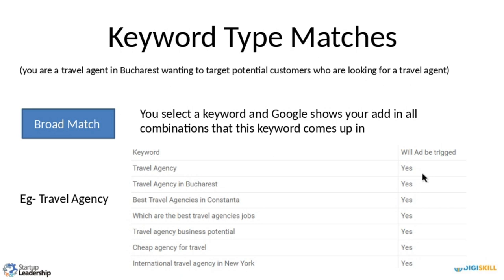By default, all the keywords you select on Google are broad match. It is up to you as a user to change the keyword condition. Google's objective is to maximize their revenue from you, so if you as a user are not informed, it's caveat emptor. Google by default keeps everything broad match unless you change it — that's the first and most critical thing to understand.